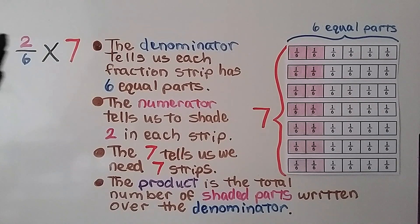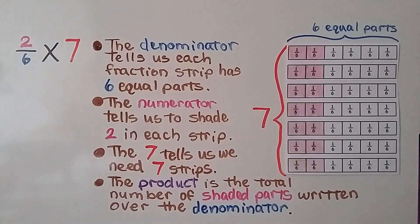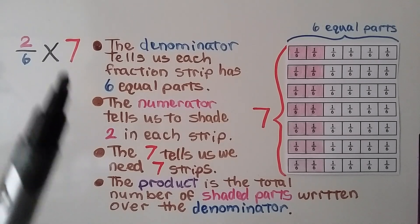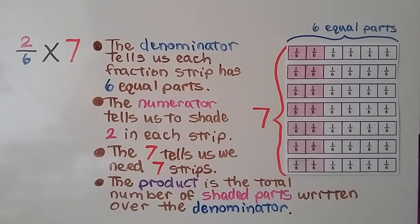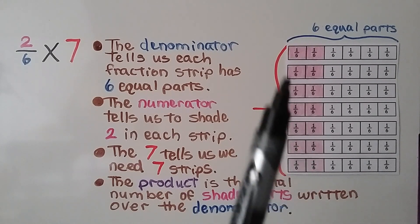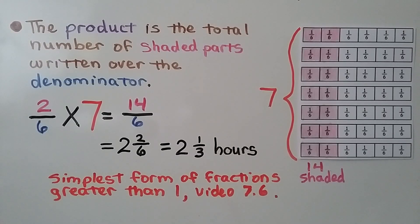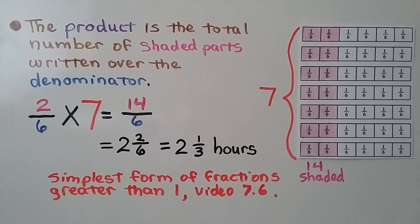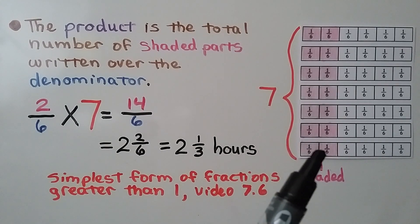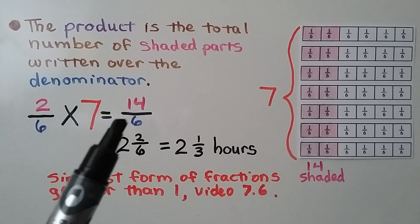The numerator, the 2, tells us to shade in 2 in each strip. And the 7, the whole number, tells us we need 7 strips. The product is the total number of shaded parts — all these pink parts — written over the denominator. We have 14 shaded parts in all, so our numerator is 14, written over the denominator 6.